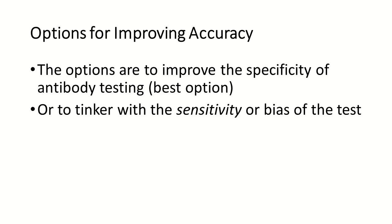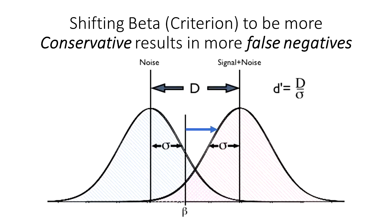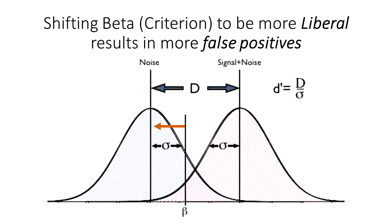Of course, our goal here is to maximize hits and minimize false alarms and misses. The best way to do that is to improve the specificity of the antibody testing, and that's where most people are pushing. The other thing that can be done with these tests is tinkering with sensitivity or bias of the test. Essentially, we can shift the criterion to the right or more conservative. That's going to increase the number of false negatives, and as a result we're going to miss quite a few people who have had COVID-19 or have antibodies. We can also shift it to be more liberal. This is going to result in more false positives. So one of the issues with these tests is, without knowing all of the details and what false positive and false negative rates are, is currently very difficult.